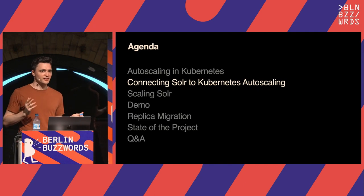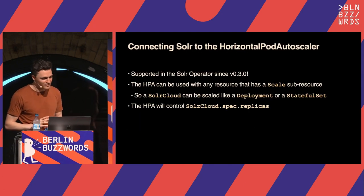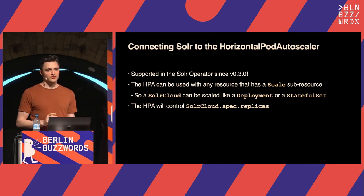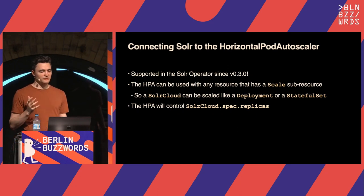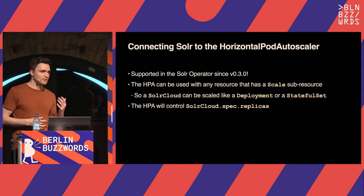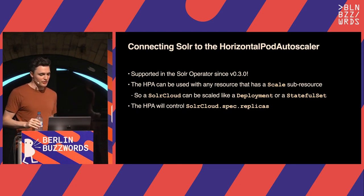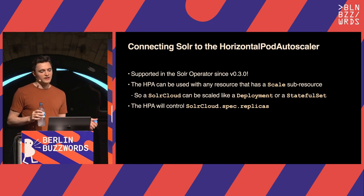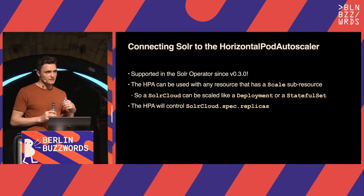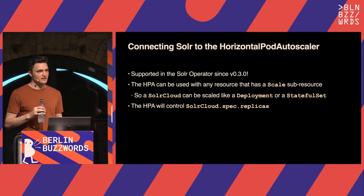We have Kubernetes autoscaling and we're going to use the HPA. How do we actually connect Solr to use this? Luckily it's really easy, and you've been able to do it for a long time. The Solr Operator v0.3.0 was the first Apache release, out roughly two years ago, and it supported HPA autoscaling because any resource in Kubernetes with a scale sub-resource supports autoscaling. The SolrCloud has this resource, so it can be scaled just like a deployment or stateful set. Once you enable the HPA, it controls the replicas option in the SolrCloud spec — you don't need to set explicit replicas, just leave it empty and let the HPA handle it.